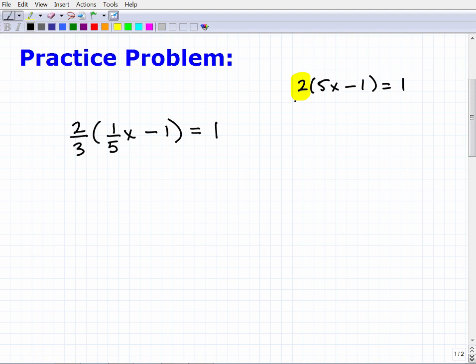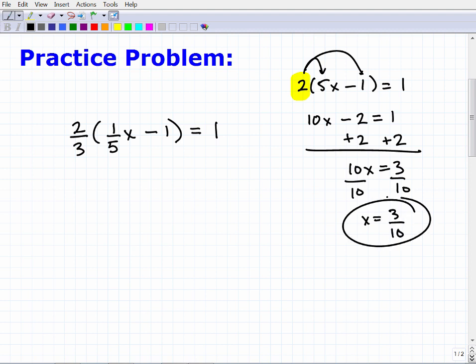It's going to be 2 times 5x which would be 10x, and then 2 times this negative 1, that would be minus 2 equals 1. Then to solve this, we're going to add 2 to both sides of the equation, so we get 10x is equal to 3. Last but not least, divide both sides by 10, so we get x is equal to 3 over 10. This would be our solution.